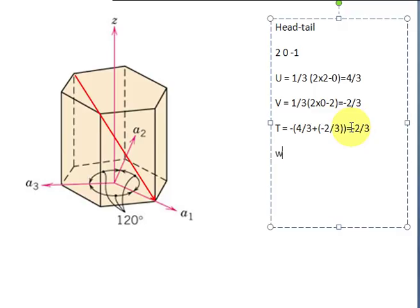And then W is equal to W', which is minus 1. So, after that, you just multiply all three of this by 3. And then you will get indices of 4, 2 bar, 2 bar, and 1 bar. In other words, it will look like this.